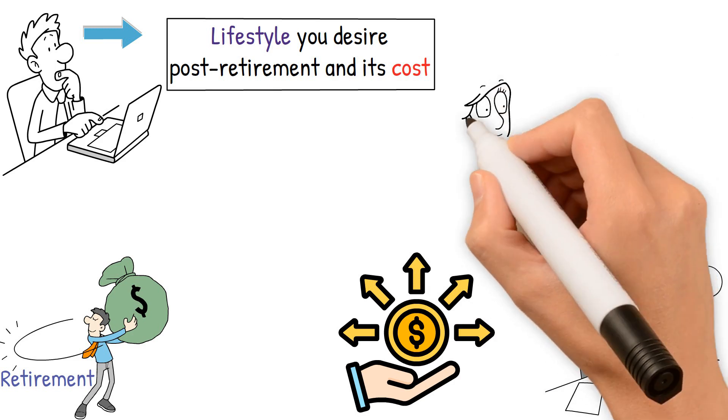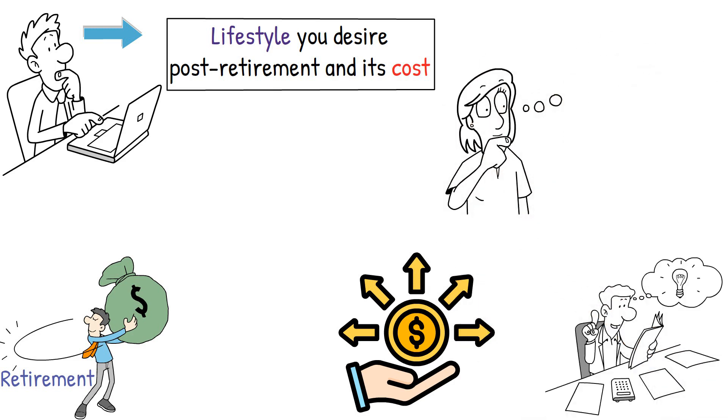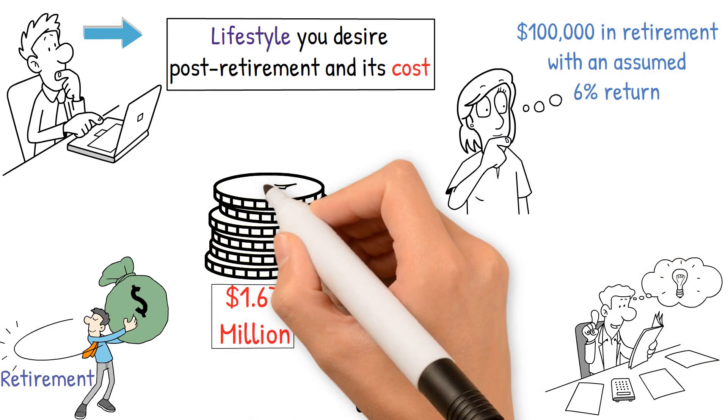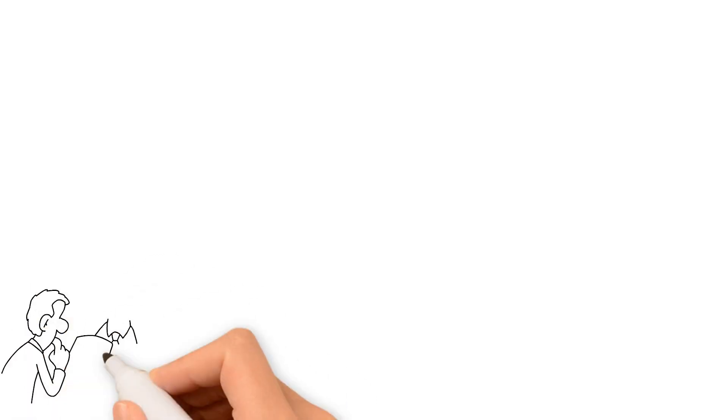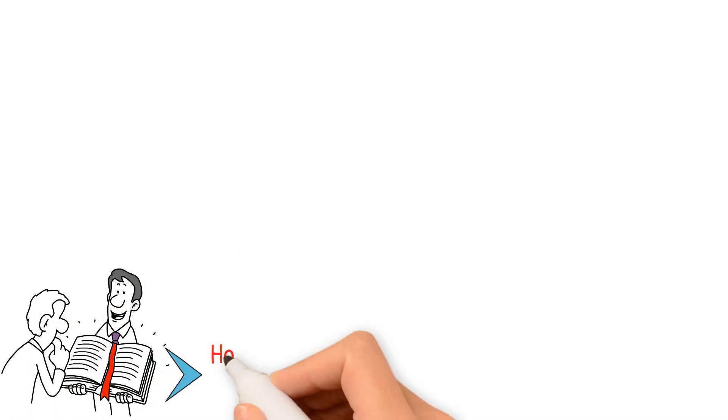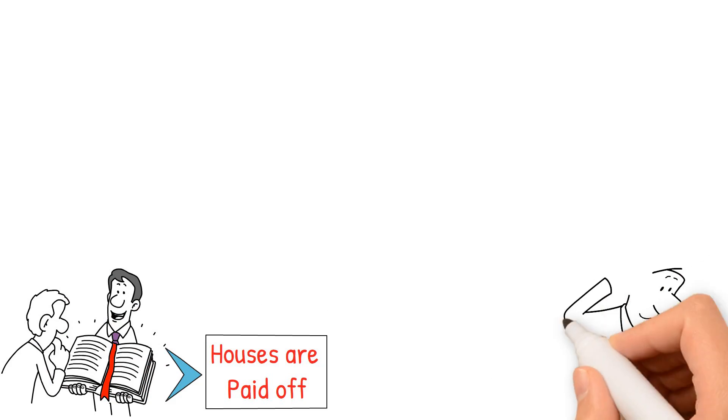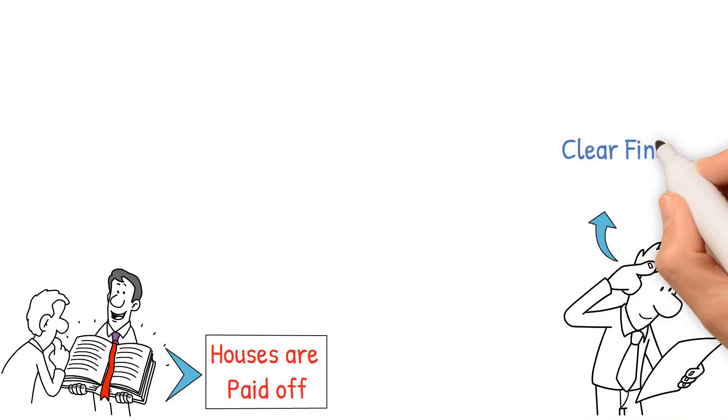For instance, if you wish to have an annual income of $100,000 in retirement with an assumed 6% return, you'll need around $1.67 million saved up. This is a broad guideline, expecting that major assets like houses are paid off. This discussion helps readers set a clear financial target.